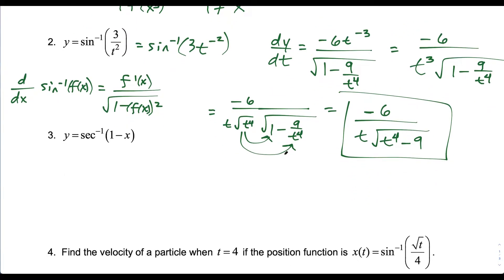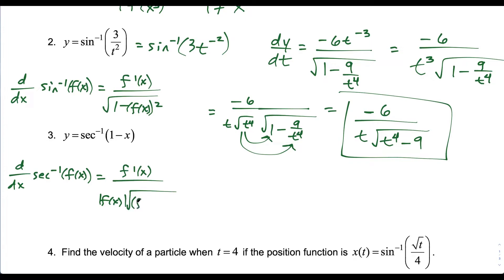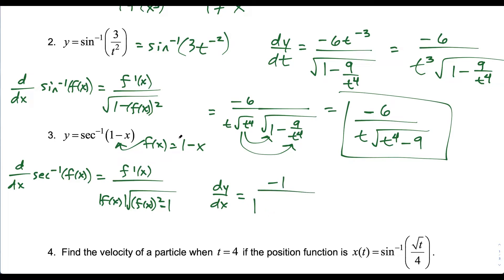For the third example, just know the derivative with respect to x of secant inverse of any function equals the derivative of the inside over the absolute value of the inside function times the square root of the inside function squared minus 1. For this question, our f of x equals 1 minus x, so dy/dx equals negative 1 over the absolute value of 1 minus x times the square root of 1 minus x squared minus 1.